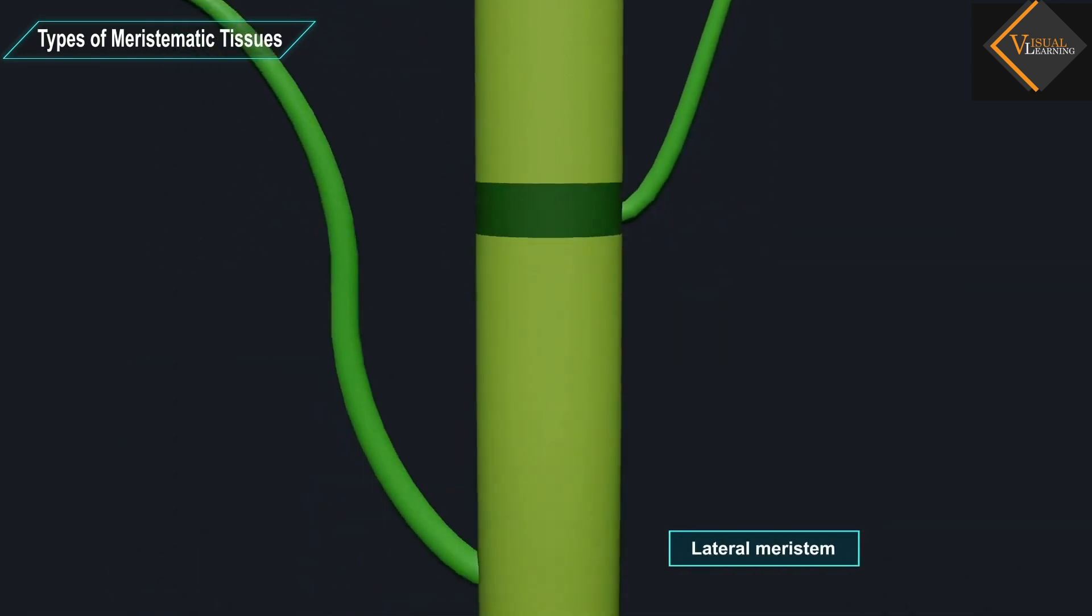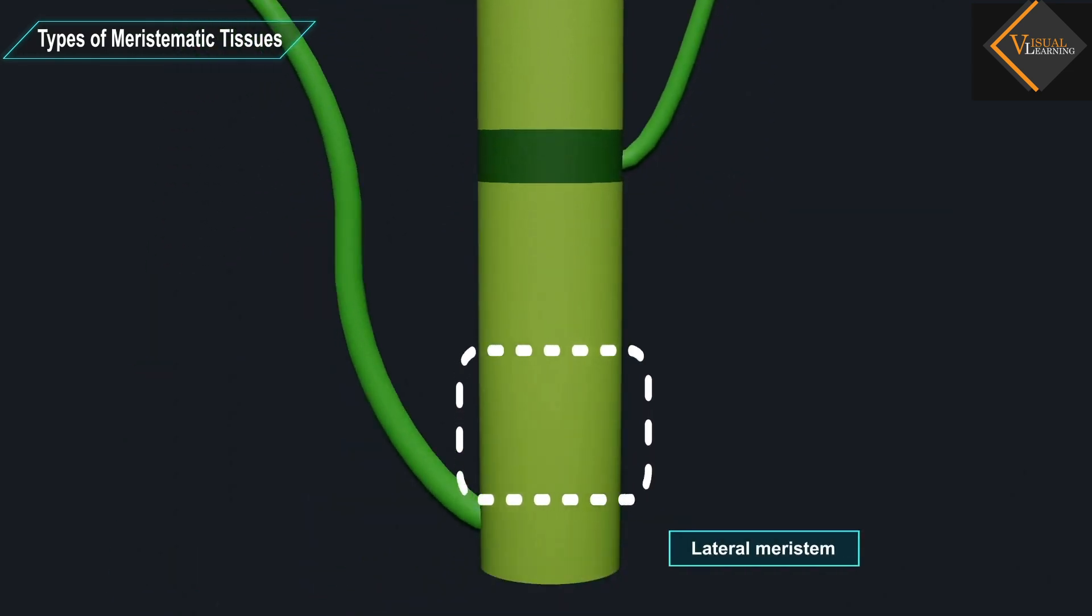Lateral meristem is present in the radial portion of the stem or root. Lateral meristem increases the thickness of the plant.